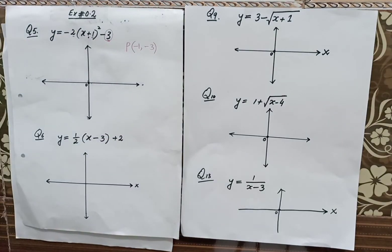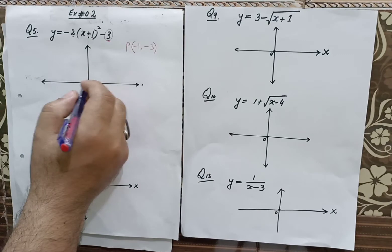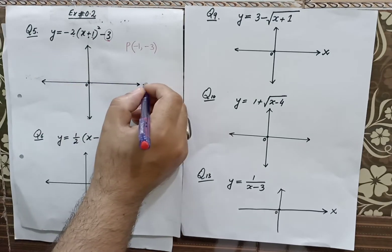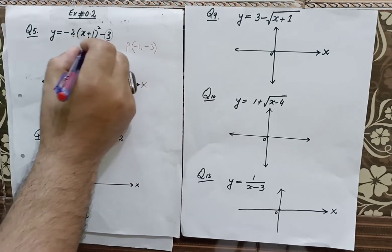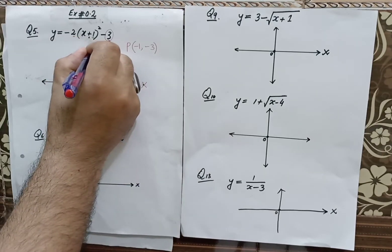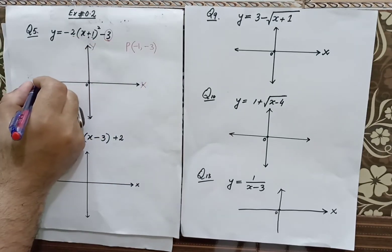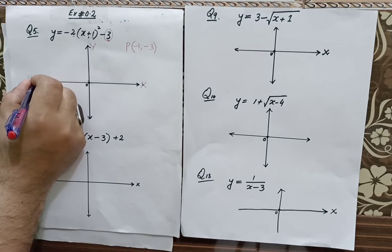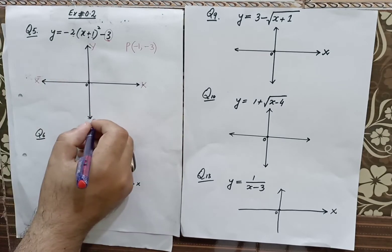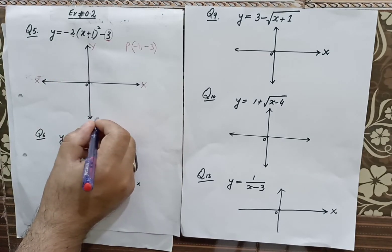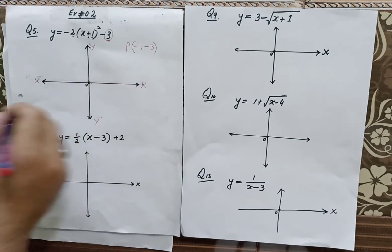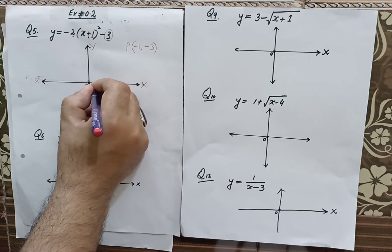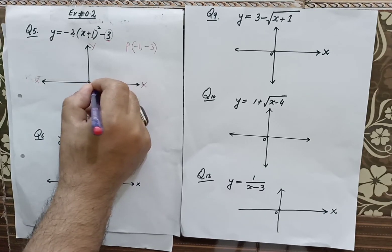Now let's look at this graphical function. Here I have developed the x and y coordinates. This is the positive x-axis, this is the positive y-axis, this is the negative x-axis, this is the negative y-axis, and we have the origin. Now let me add some scale here.